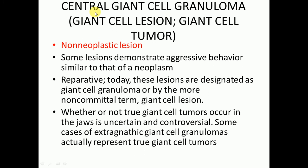Some lesions demonstrate aggressive behavior similar to that of a neoplasm, but it is not a neoplasm. It is mostly reparative. These lesions are designated as giant cell granuloma or by the more non-committal term giant cell lesion, so it is better to call it a lesion rather than a tumor. Whether or not true giant cell tumors occur in the jaws is uncertain and controversial.